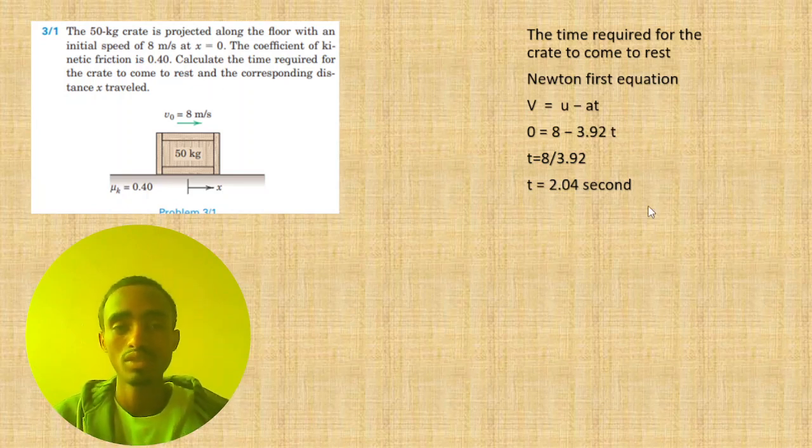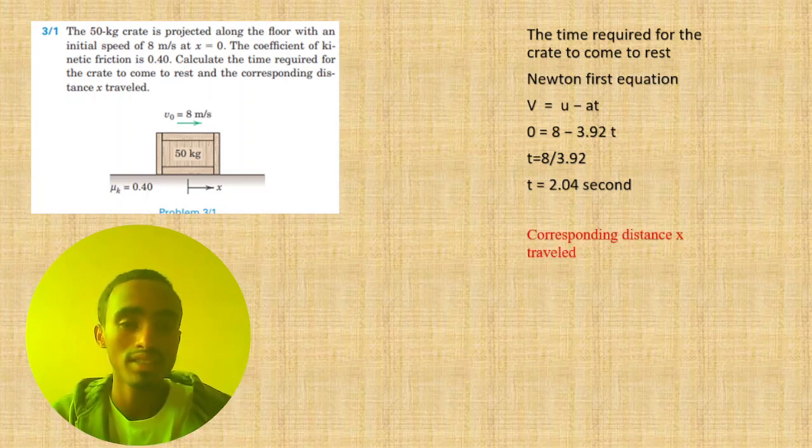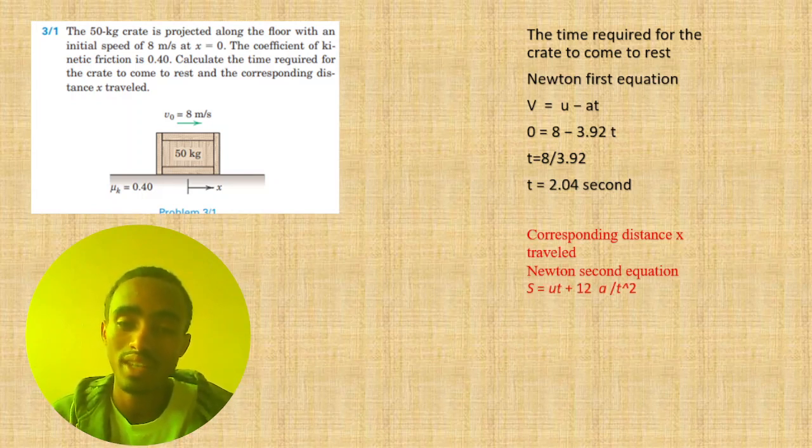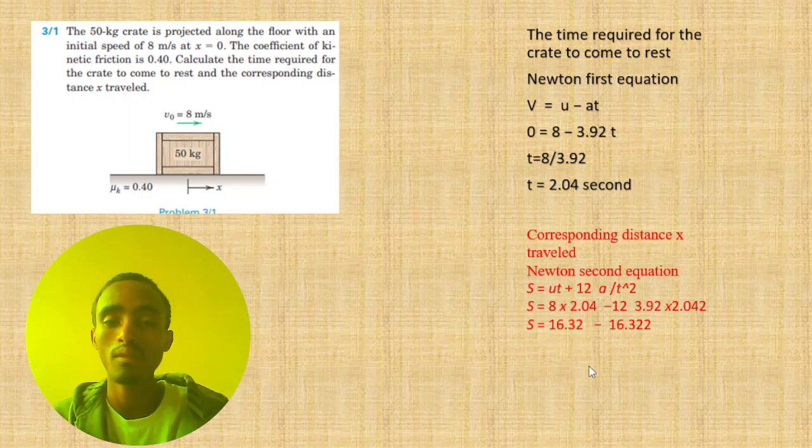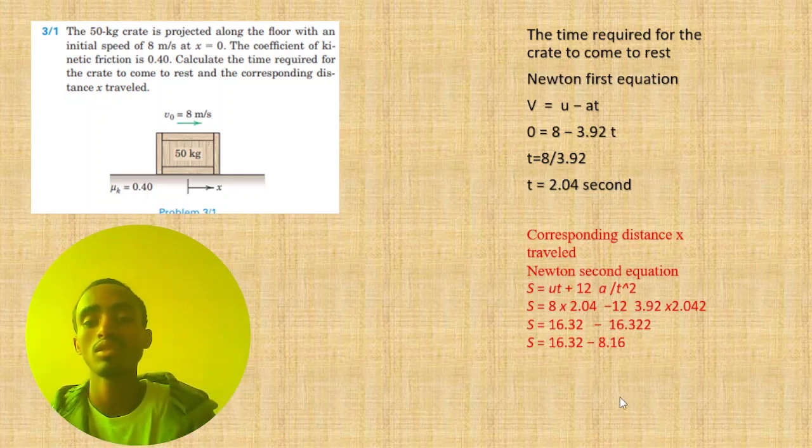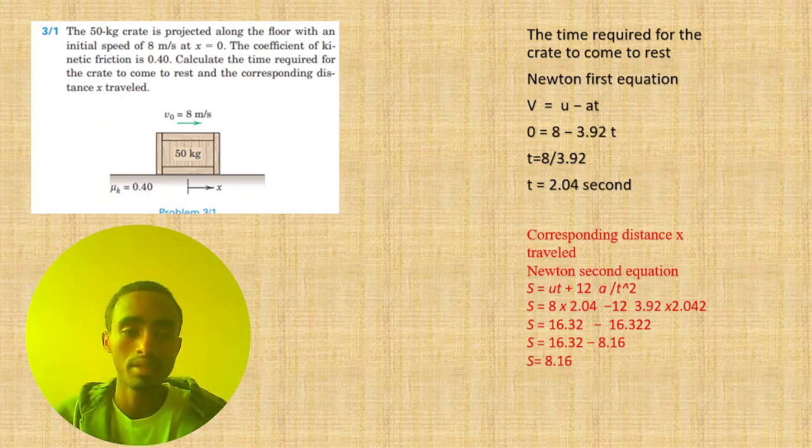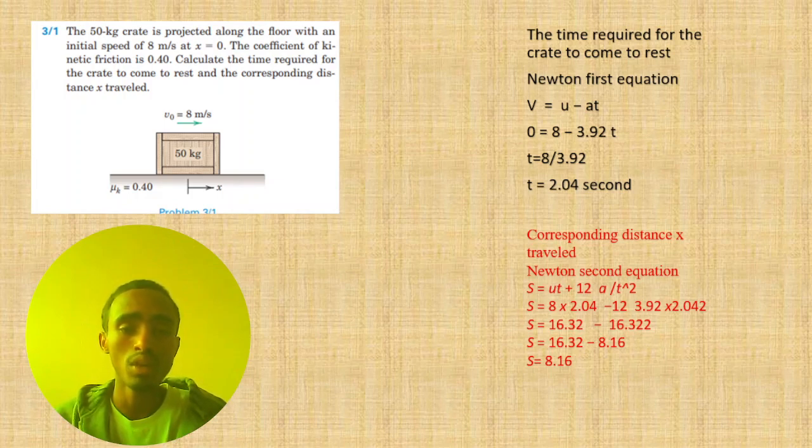The corresponding distance x traveled uses the equation: distance equals initial velocity times time plus one-half acceleration times time squared. All values are given from our previous calculations. Substituting the values, we get the distance which is 8.16 meters. So we can simply calculate this problem.